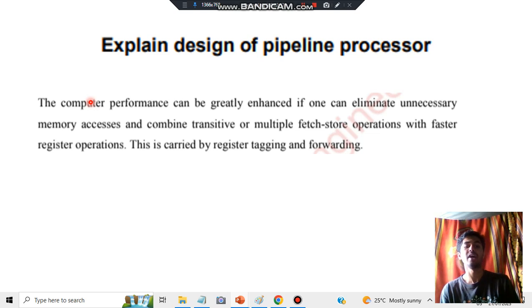This can be done by using the buffers and it can combine transitive multiple fetch store operations with faster register operations. If you do this unnecessary task removal then you will be able to perform the operations faster and you can fetch the results faster. This is carried by register tagging and forwarding. What is register tagging? You are using which register you're making that as the main thing. And forwarding means after you get the result from it after giving the input and the processing, that output will be forwarded.